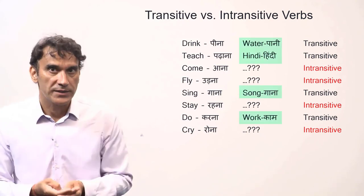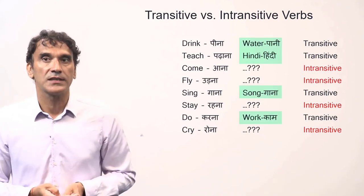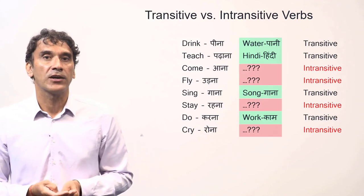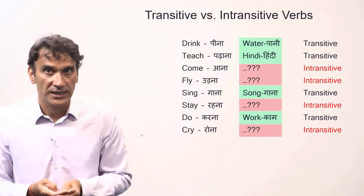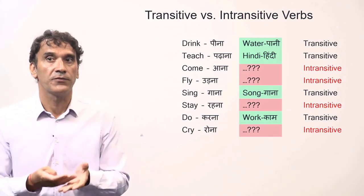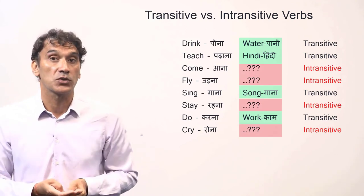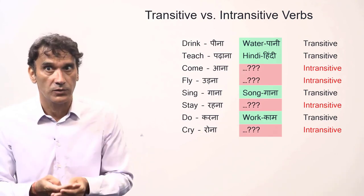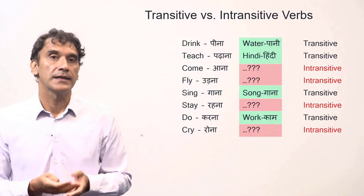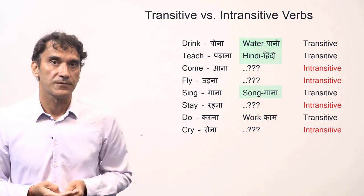Just to quickly recap: if a verb can have a direct object, it is transitive. If it cannot have a direct object — if you cannot ask the question 'what?' to the verb — then it is intransitive.